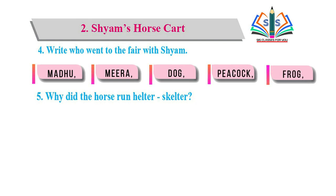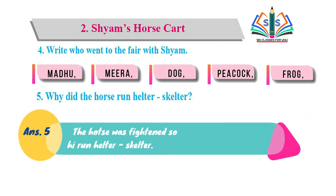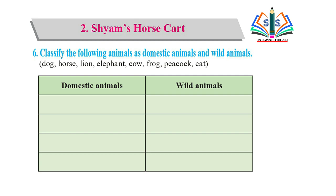Why did the horse run helter-skelter? Horse جو ہے وہ کیوں helter-skelter ہو گیا تھا، کیوں بھاگ گیا تھا؟ The horse was frightened, so he ran helter-skelter. Our sixth question is: classify the following animals as domestic animals and wild animals.